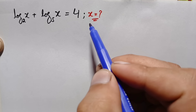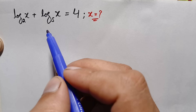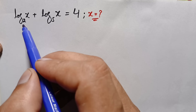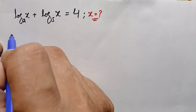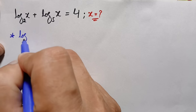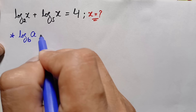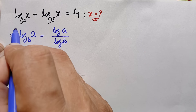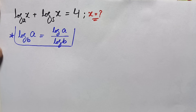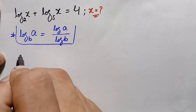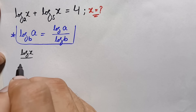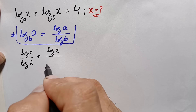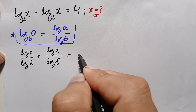Here we will try to find the value of x. How can we solve this math problem? First of all, in the left hand side in both terms, we will use a logarithm property: log of a with base b can be written as log of a divided by log of b. Using this identity, the left hand side becomes log of x divided by log of 2, plus log of x divided by log of 5, is equal to 4.